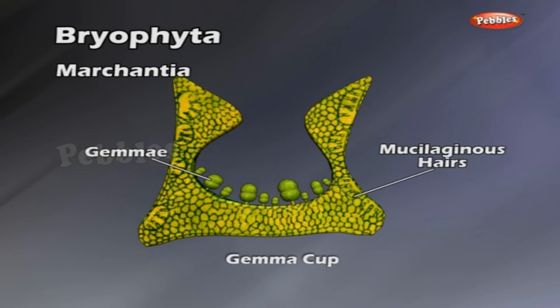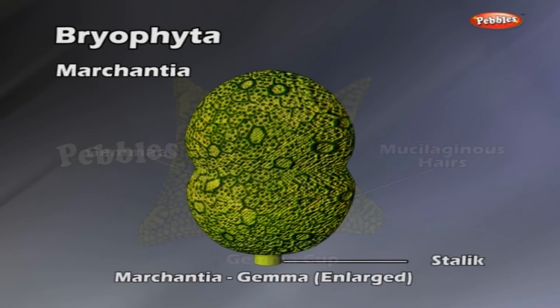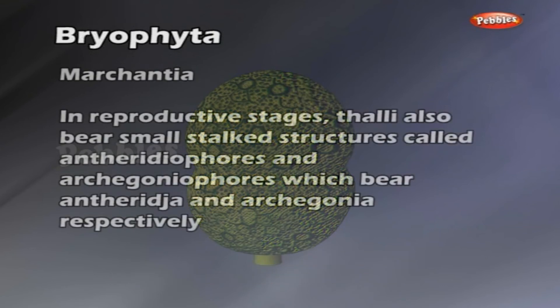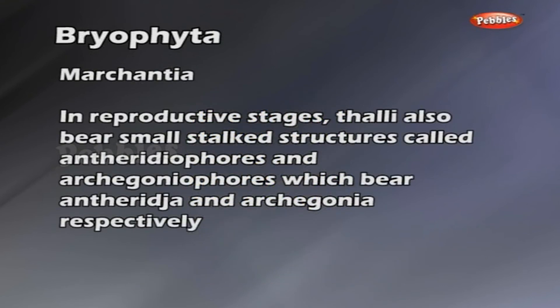These cups enclose asexual reproductive bodies called gemmae. In reproductive stages, thalli also bear small stalked structures called antheridiophores and archegoniophores, which bear antheridia and archegonia respectively.